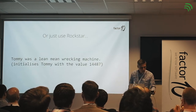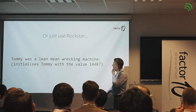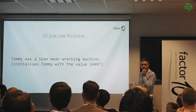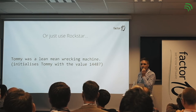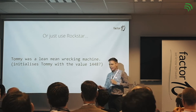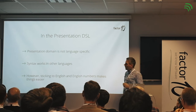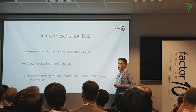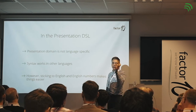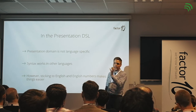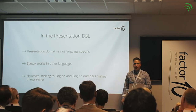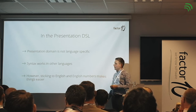What we should probably do is use Rockstar. To initialize Tommy with the value 14,487, we just write 'Tommy was a lean mean wrecking machine' — with bonus points to whoever can understand why that's correct. The presentation domain is not language-specific, so I'm going to stick with English. If we just use keywords like 'slide' and 'text', that works in other languages without changing the grammar. But we use numbers to express animation duration, so I want to keep it simple and stick to English and English numbers.